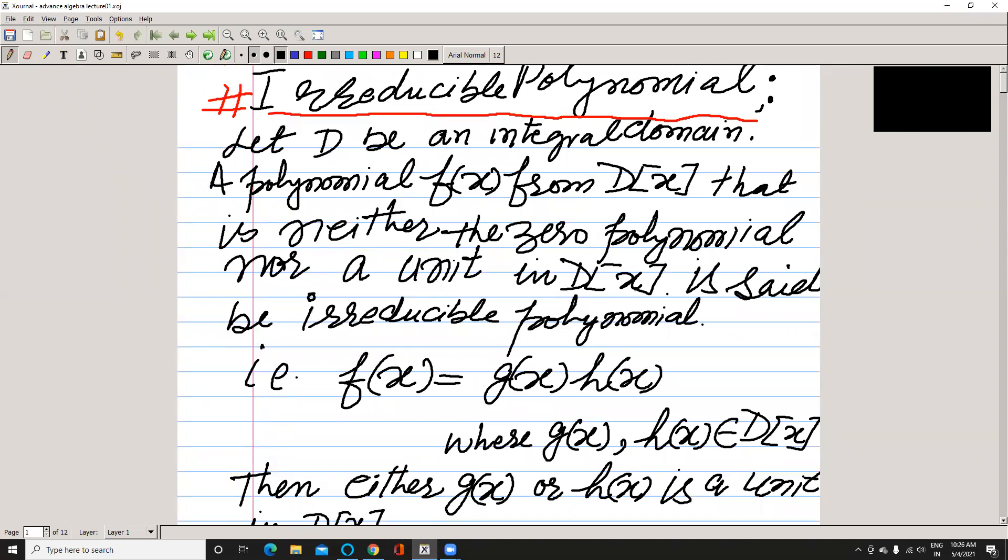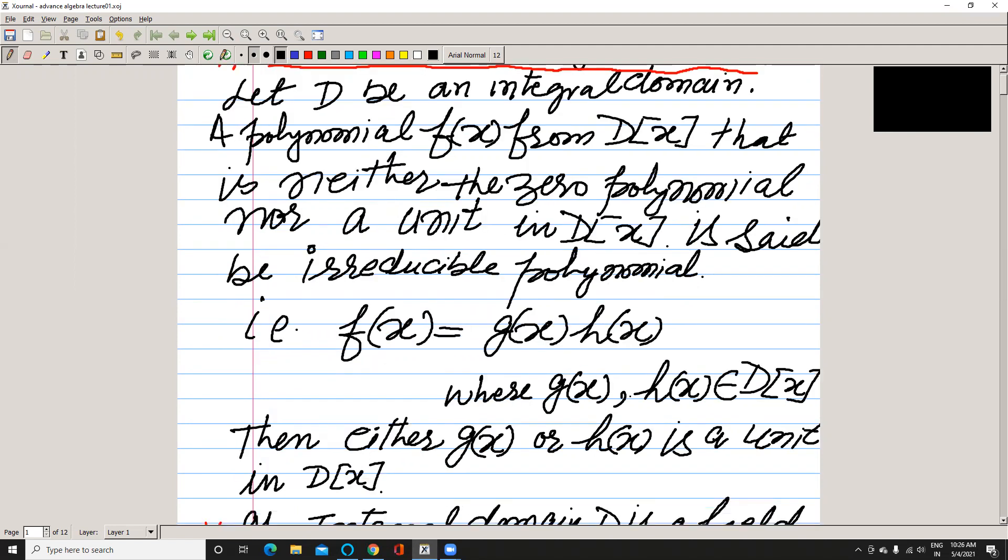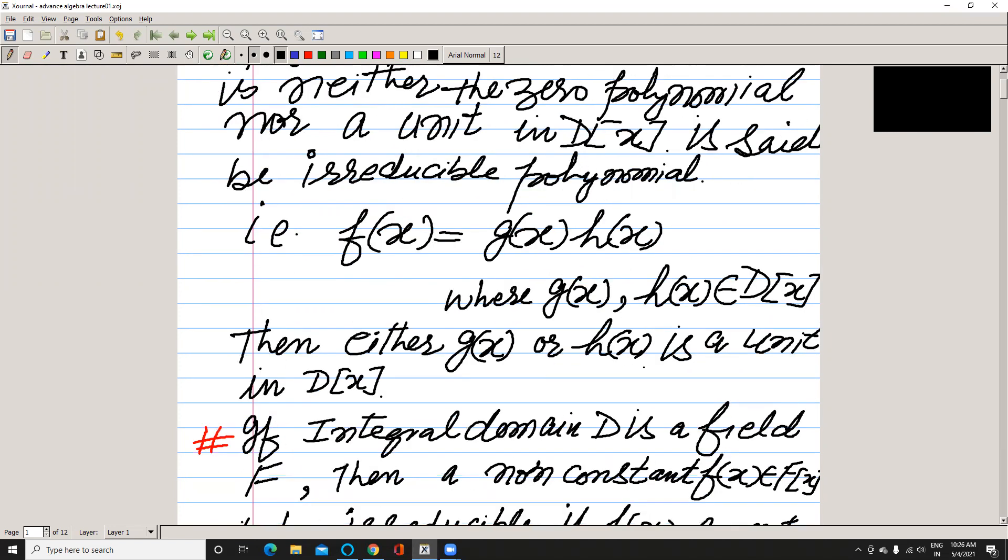That is neither the zero polynomial nor a unit in D[x] is said to be irreducible polynomial. It means that if we express f(x) = g(x)·h(x), then either g(x) or h(x) is a unit in D[x].